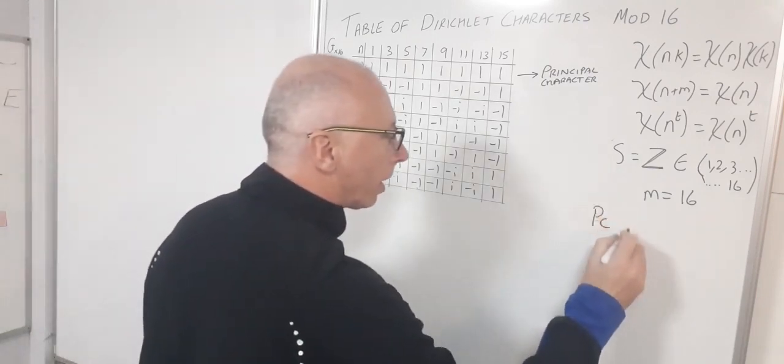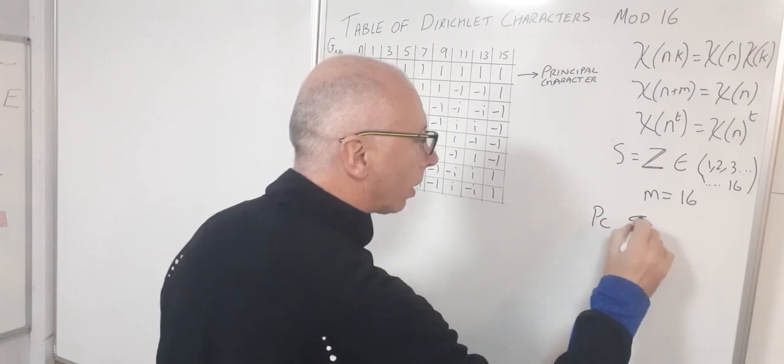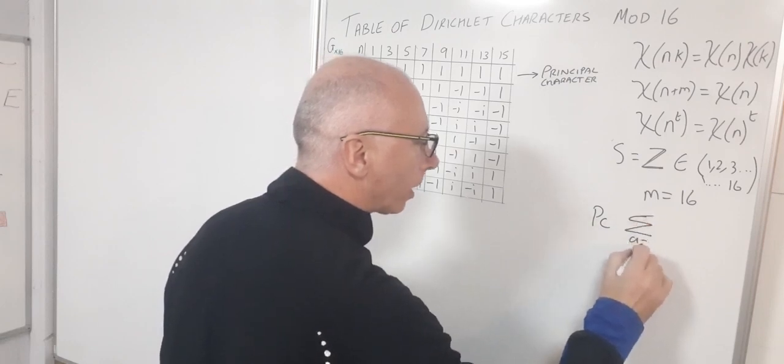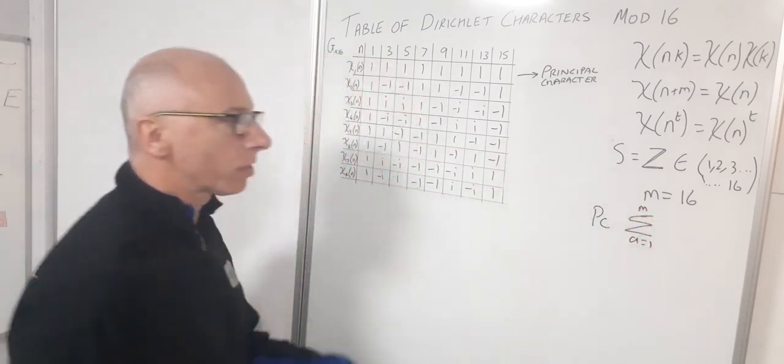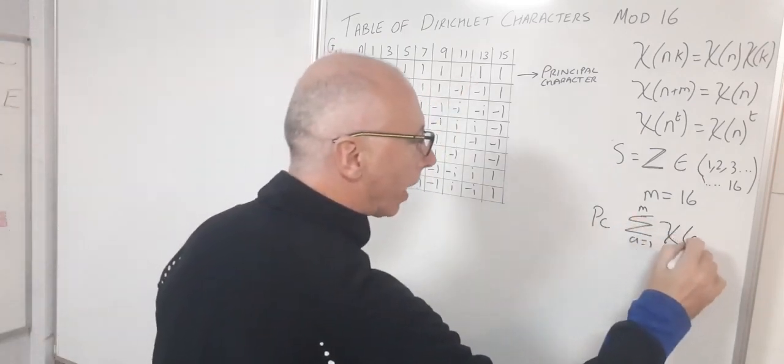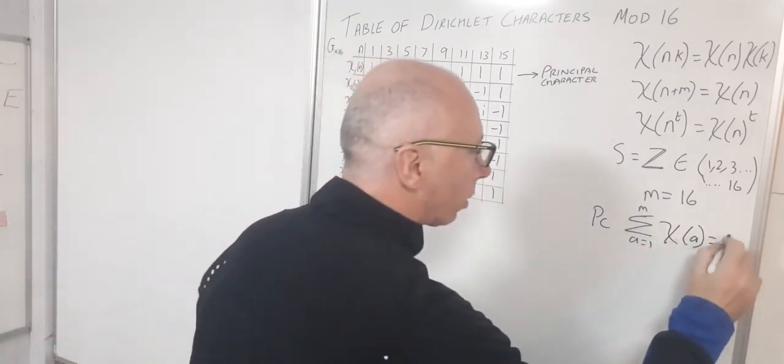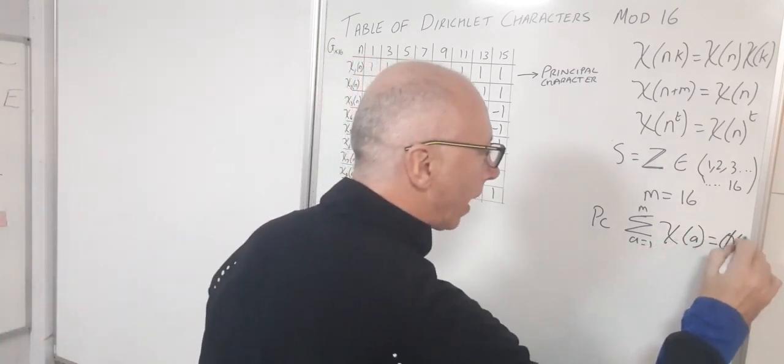So the property of this one for the principal character, I'll put PC here. Then what we do is if we sum them all up over from a equals 1 to m, so that's the sum of 1 to 16 of all the chis, so chi of a, we sum them all up, our answer will be phi of m.